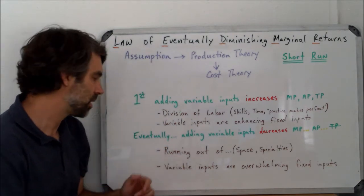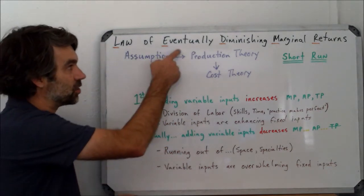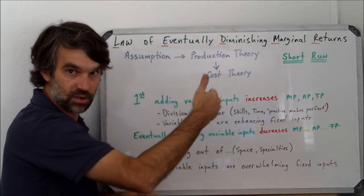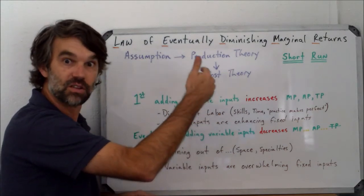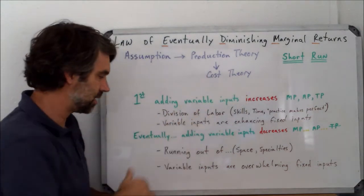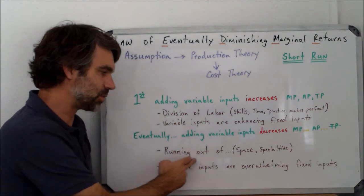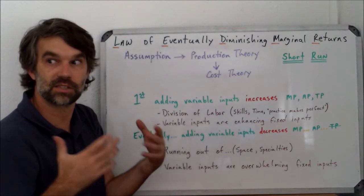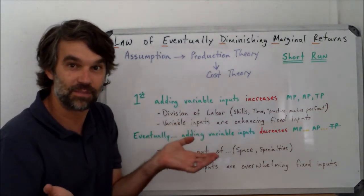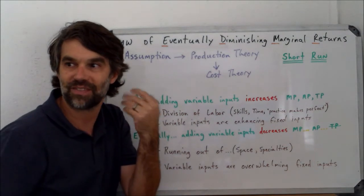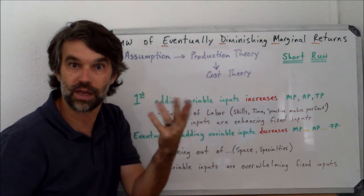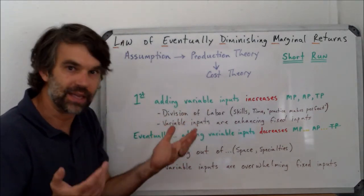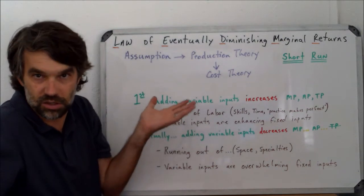So what's happening here? So again, this is after the 'eventually', so now we're seeing diminishing marginal. Keep in mind, this is from one worker or one change of the variable input to the next. So what's happening here? Well, what's happening is that we're running out of something, maybe space. Again, if we go back to my bakery and say it's the size of my classroom, you could probably have five or six people working in here pretty comfortably. Once you got past that, you'd start to get people getting in each other's way, bumping into each other, just getting in each other's way.